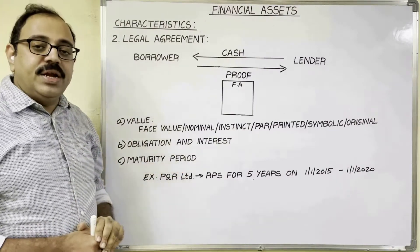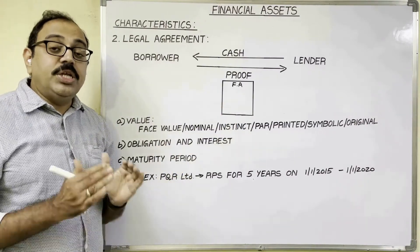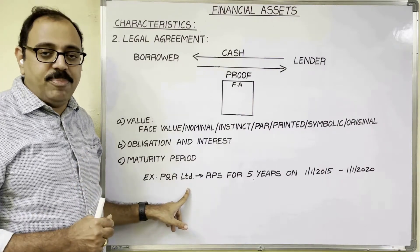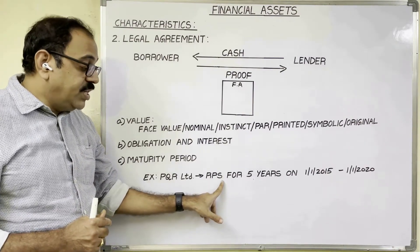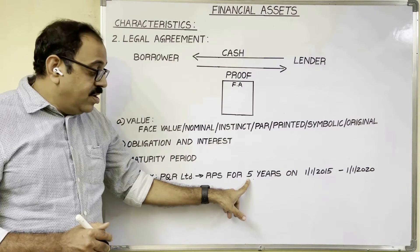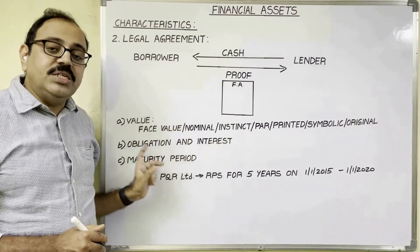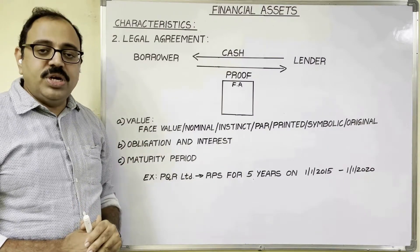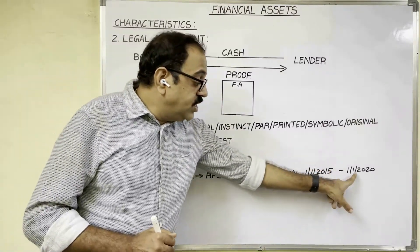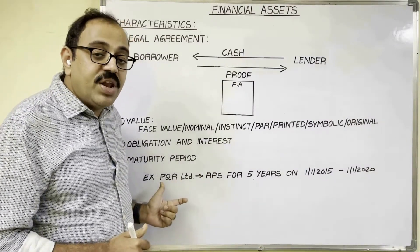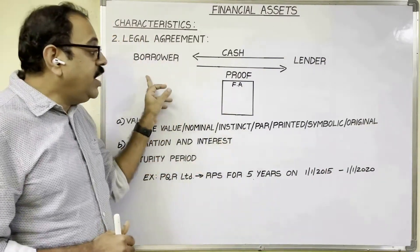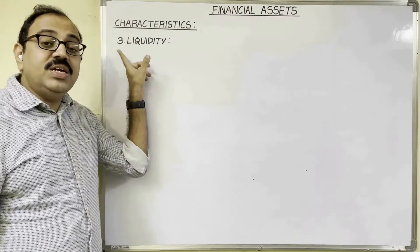Maturity period: in case of some financial assets, the maturity period is printed on that asset. For example, PQR Limited issued redeemable preference shares on 1st January 2015 for a period of 5 years. The company can keep this amount for 5 years. After completion of the maturity period, on 1st January 2020, the redeemable preference shares mature and the company must return the principal amount to the investor.